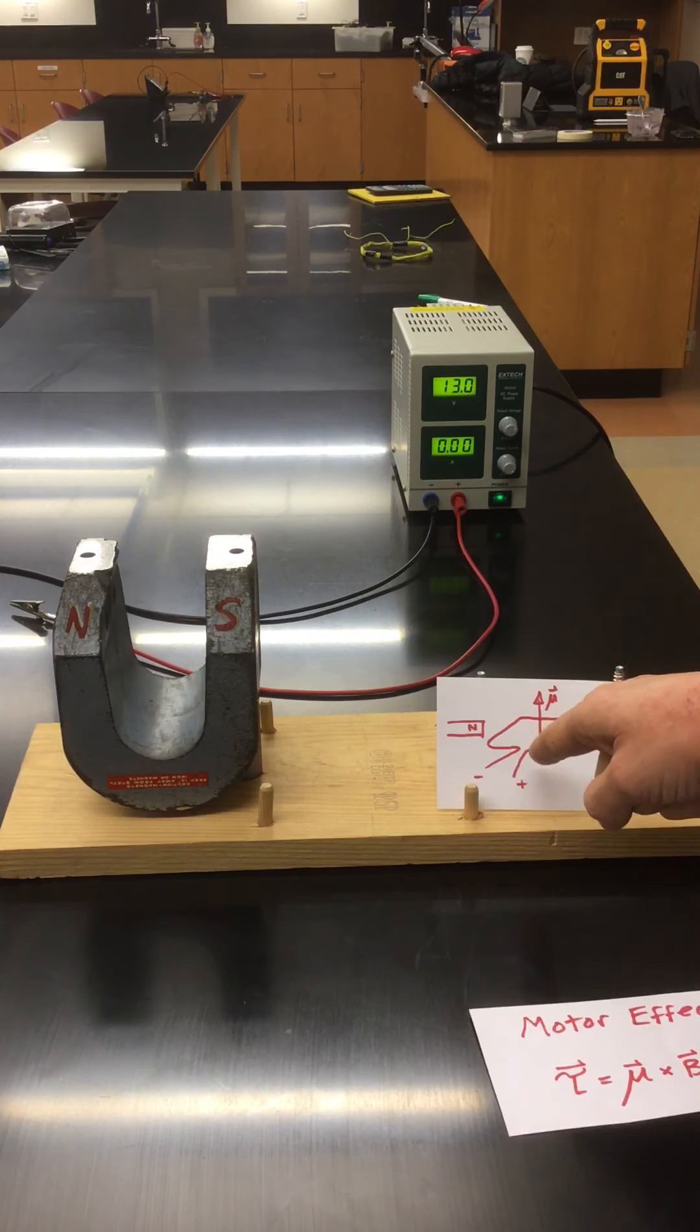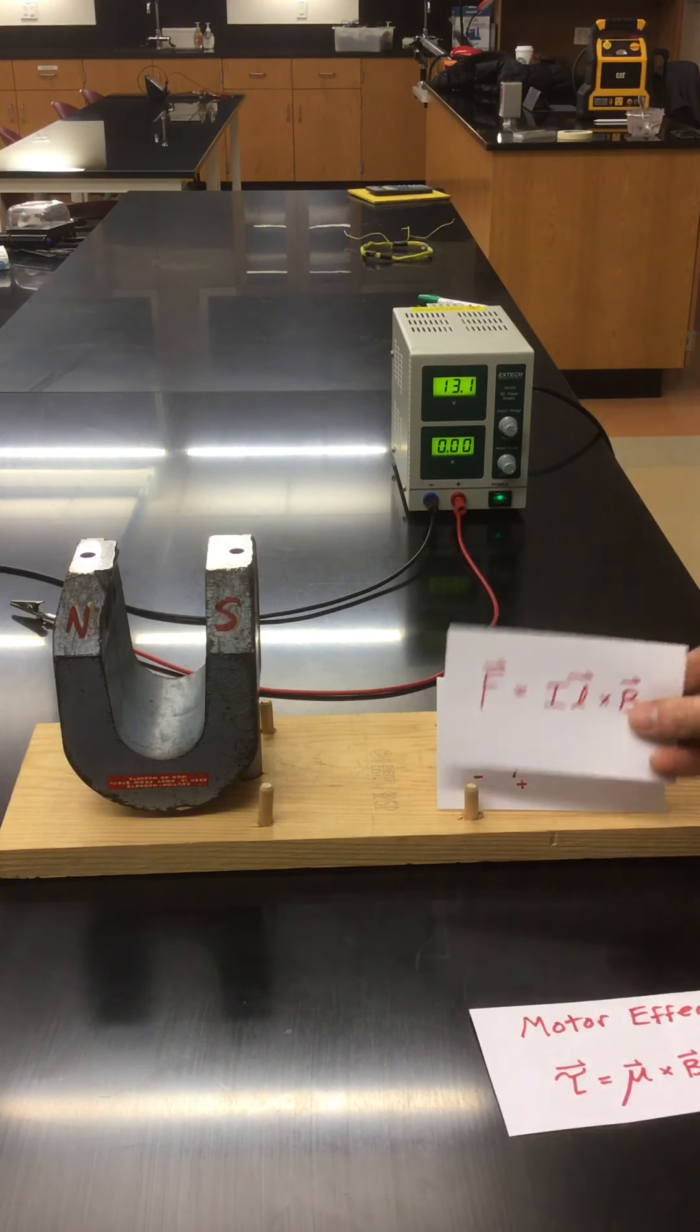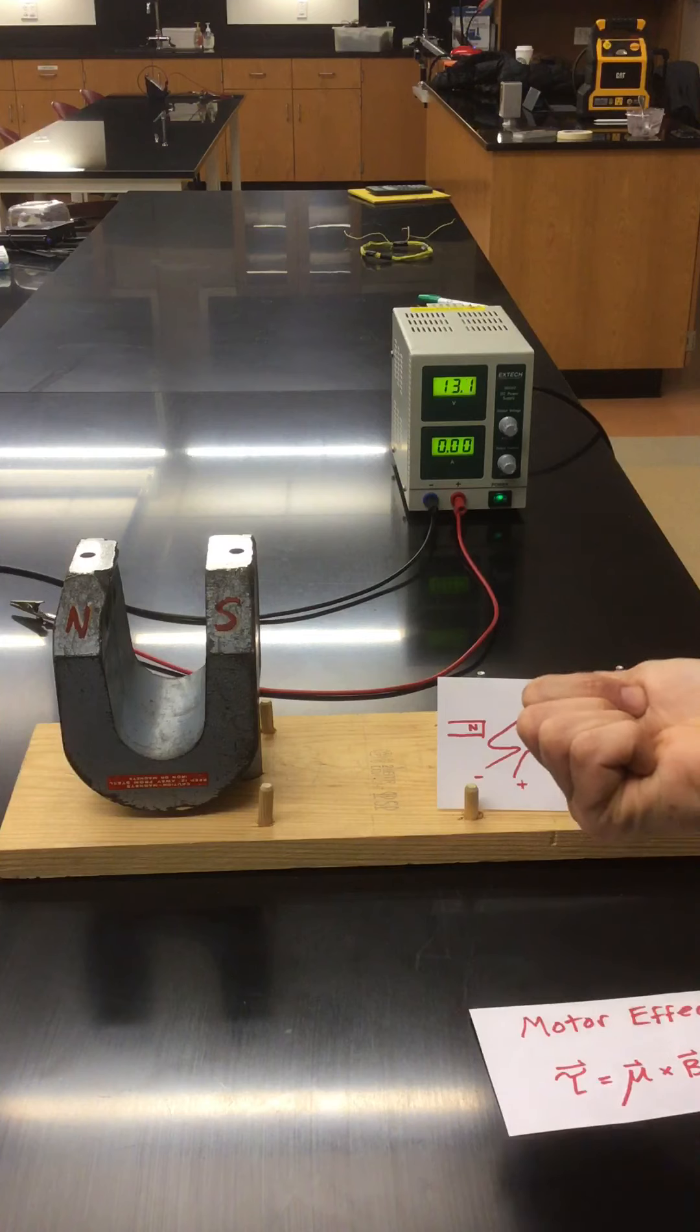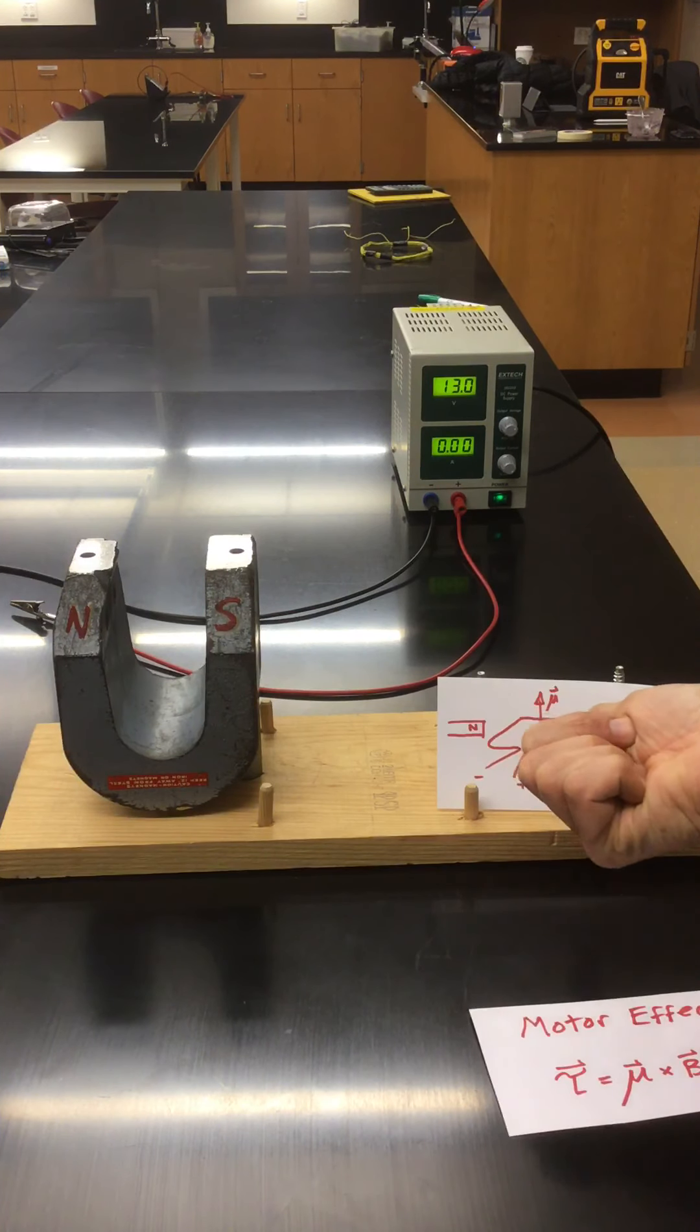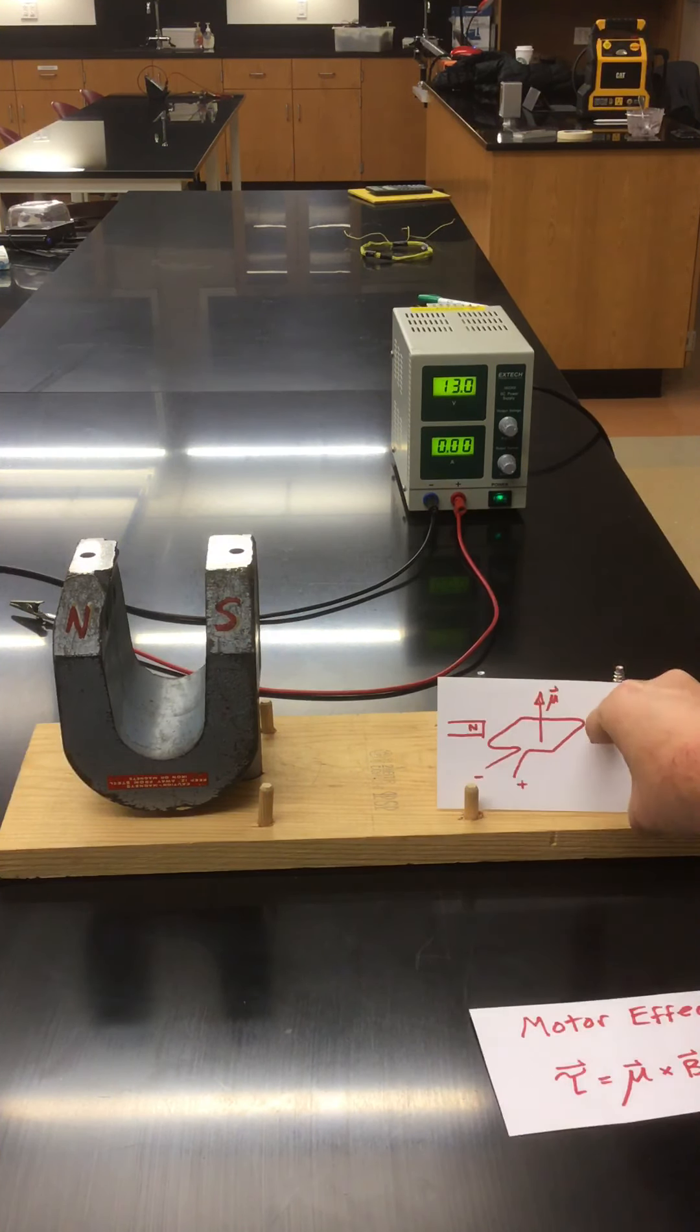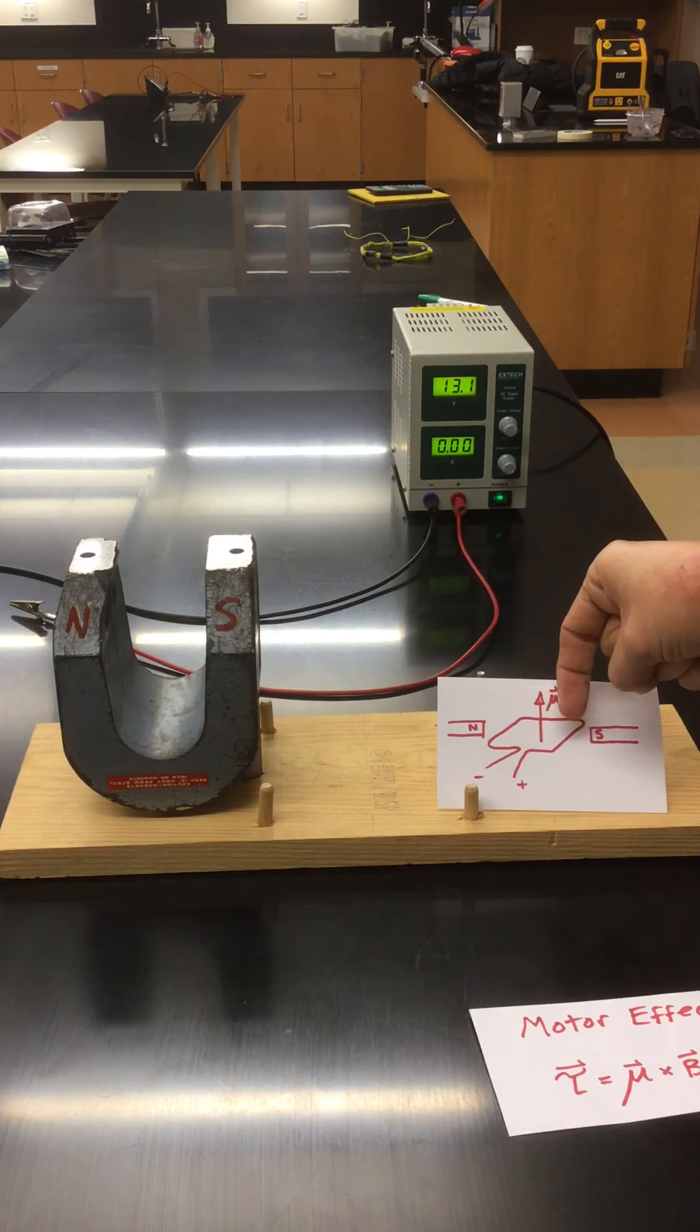So let's try our right-hand rule and figure out what would be the force on this segment of wire. So point your thumb into the note card and at the same time point your fingers to the right. Why? Because magnetic field lines would be pointing from this north pole toward this south pole. So it looks like this segment of wire would get forced downward.